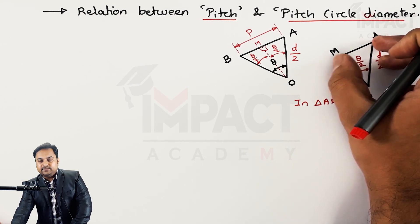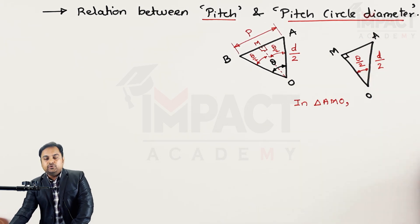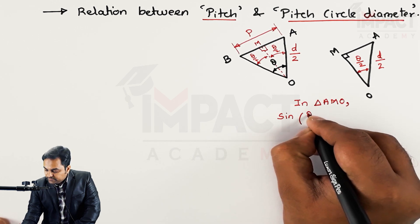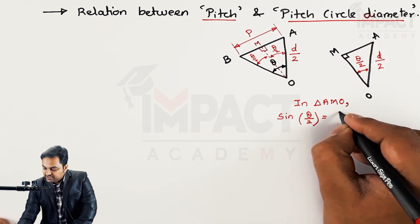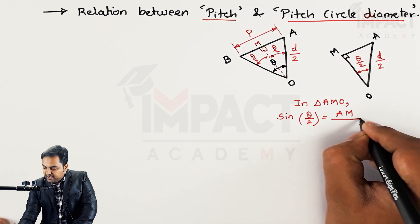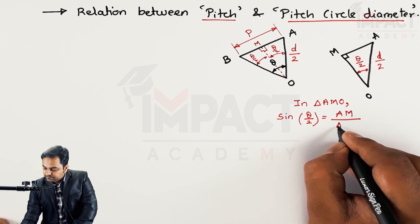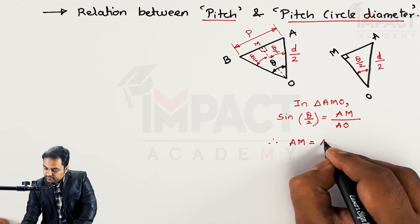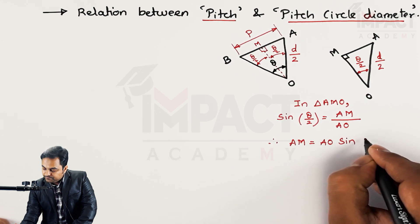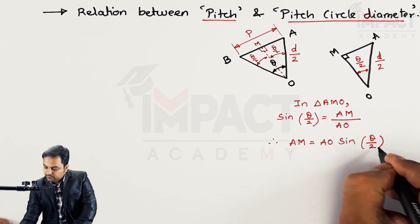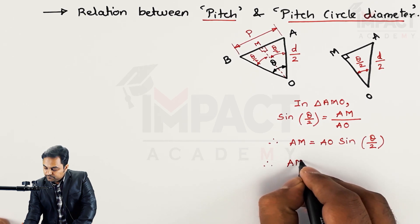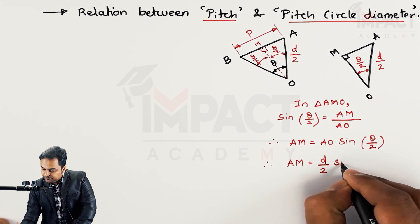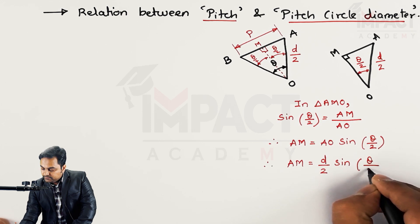In triangle AMO, to find AM — which is the side opposite to the angle — we use the sine formula: sine(theta/2) = AM divided by AO (the hypotenuse). Therefore AM = AO × sin(theta/2). Since AO = D/2, we get AM = (D/2) × sin(theta/2).